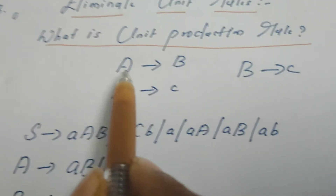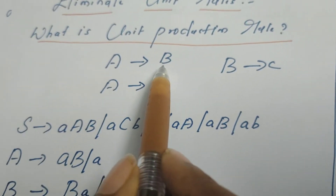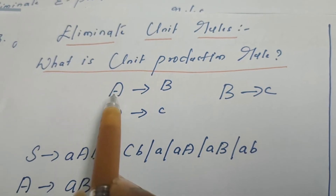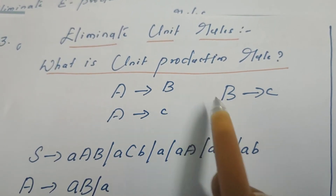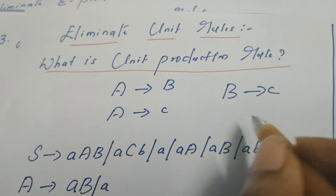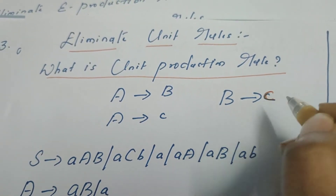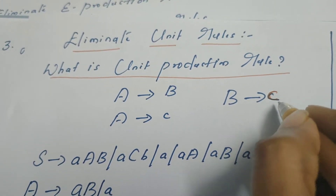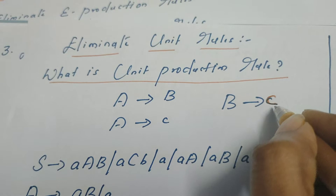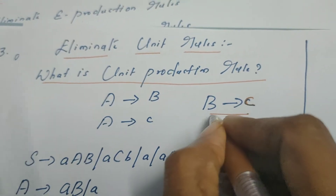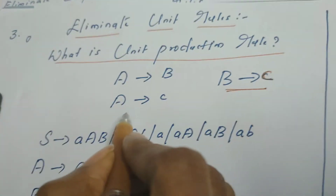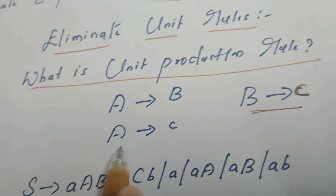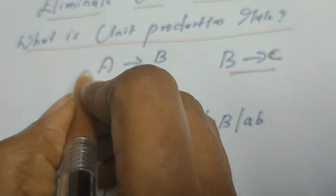A unit production rule is when a variable derives another variable. On the right-hand side, we have a single variable written in uppercase. For example, A derives B is a unit production rule; B derives C is also a unit production rule. 'Unit' means one variable on the right-hand side. However, A derives c (where c is a terminal) is NOT a unit production rule.